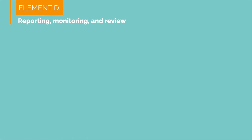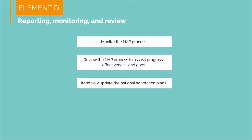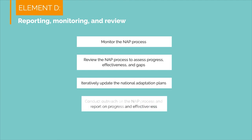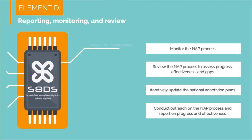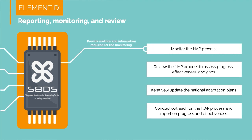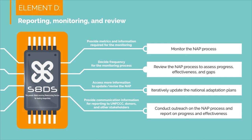The proposed steps in Element D are: monitor the NAP process; review the NAP process to assess progress, effectiveness, and gaps; iteratively update the national adaptation plans; and conduct outreach on the NAP process and report on progress and effectiveness. In Element D, the S8 Downscaler will help provide metrics and information required for the monitoring, decide frequency for the monitoring process, access more information to update or revise the NAP, and provide communication information for reporting to the UNFCCC, donors, and other stakeholders.